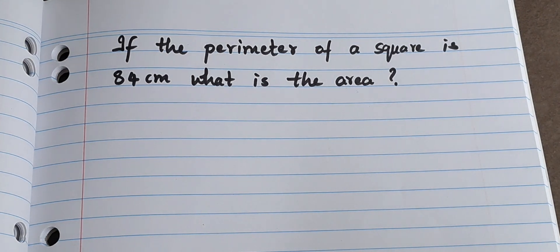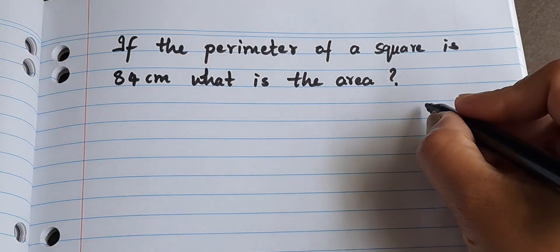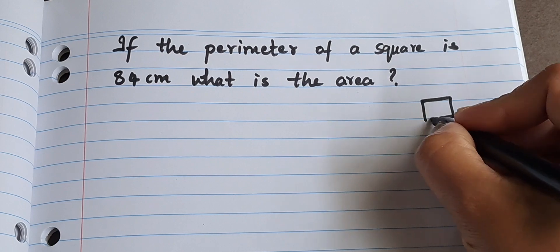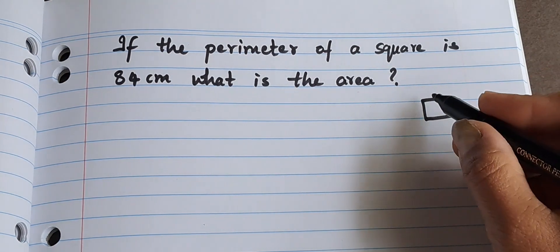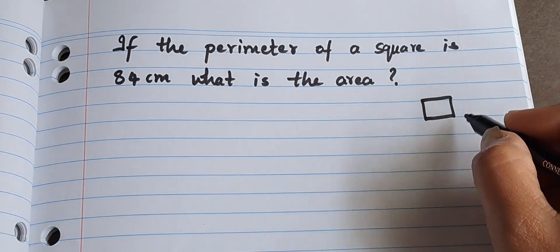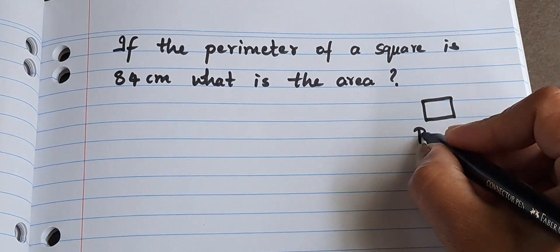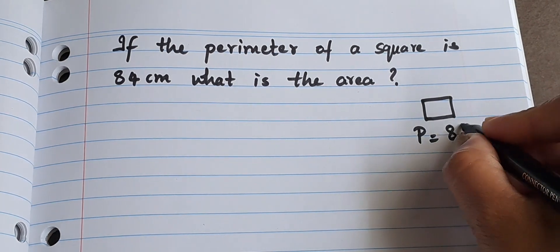They have given us the perimeter of a square. What do you mean by perimeter? Suppose this is a square. The sum of all the four sides is called the perimeter. So the perimeter is given, it is 84 centimeters.